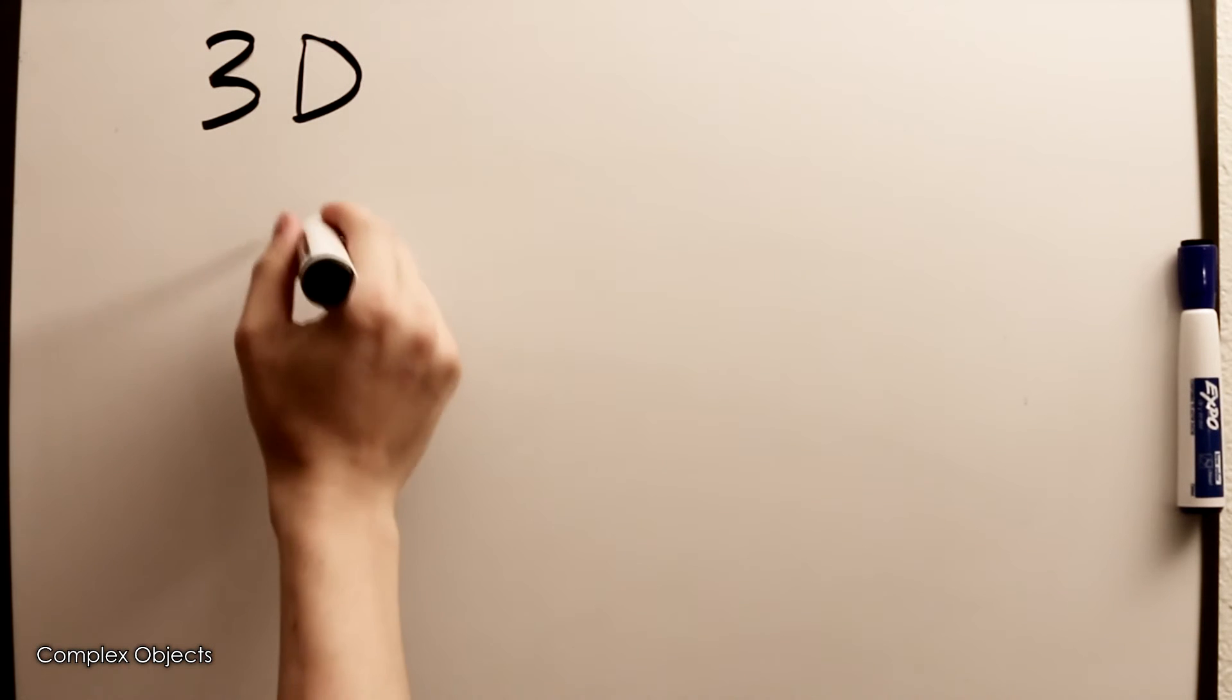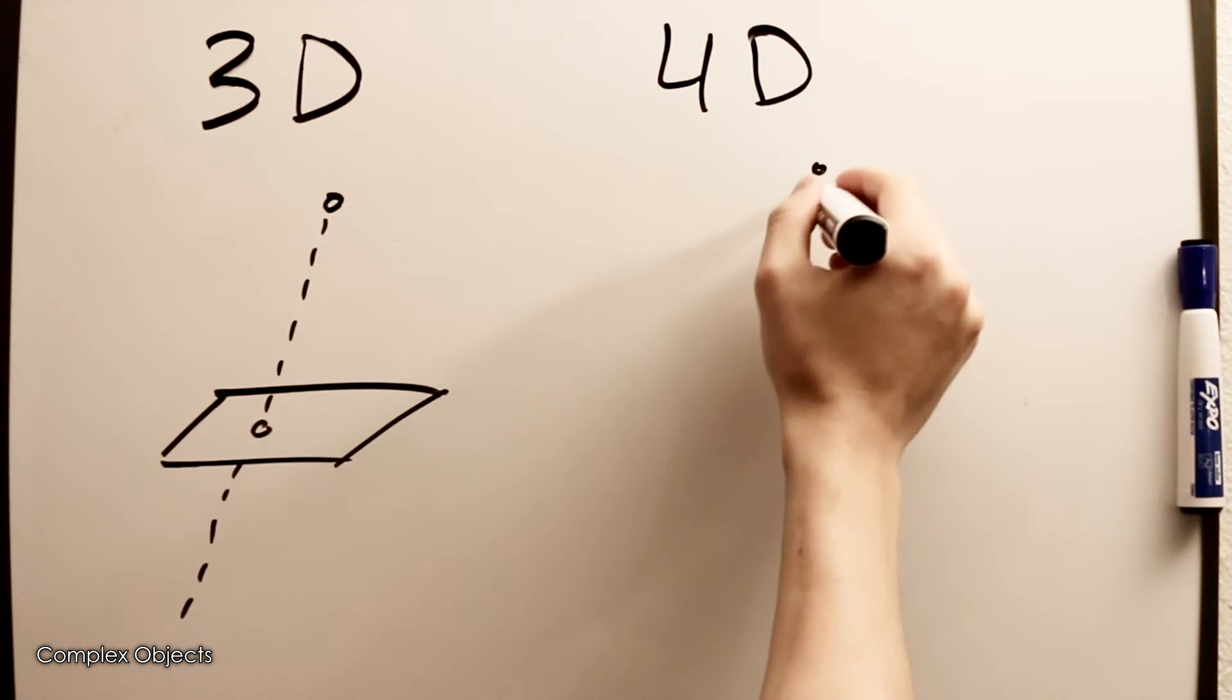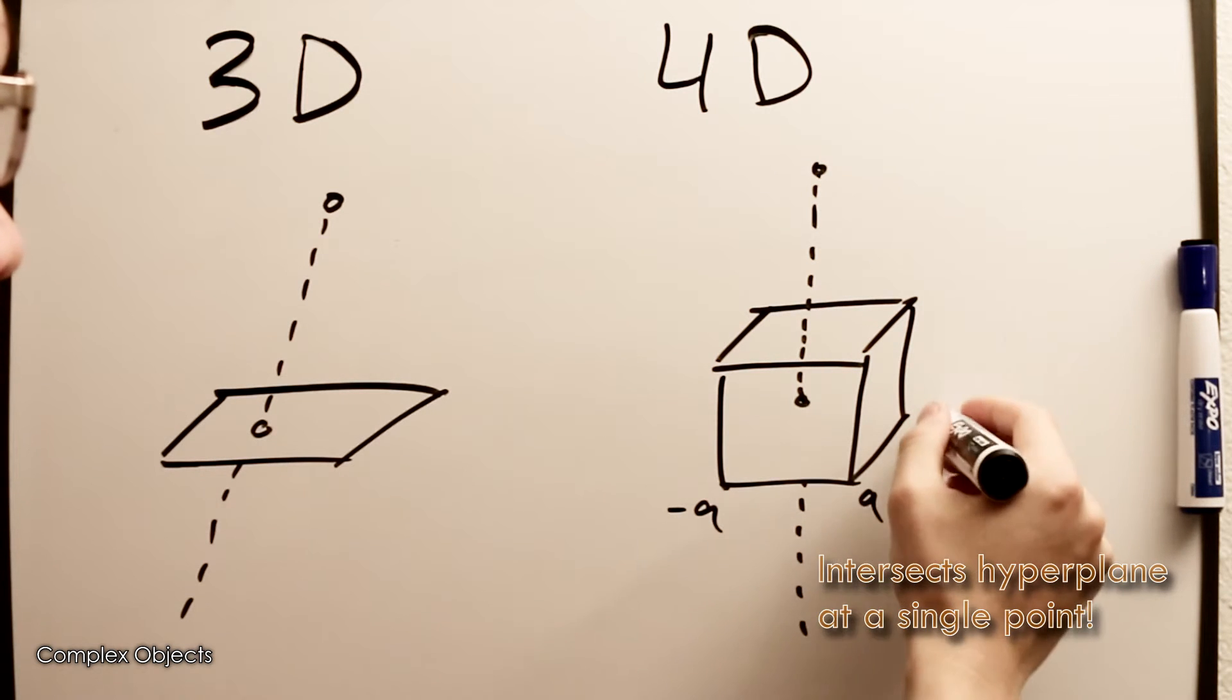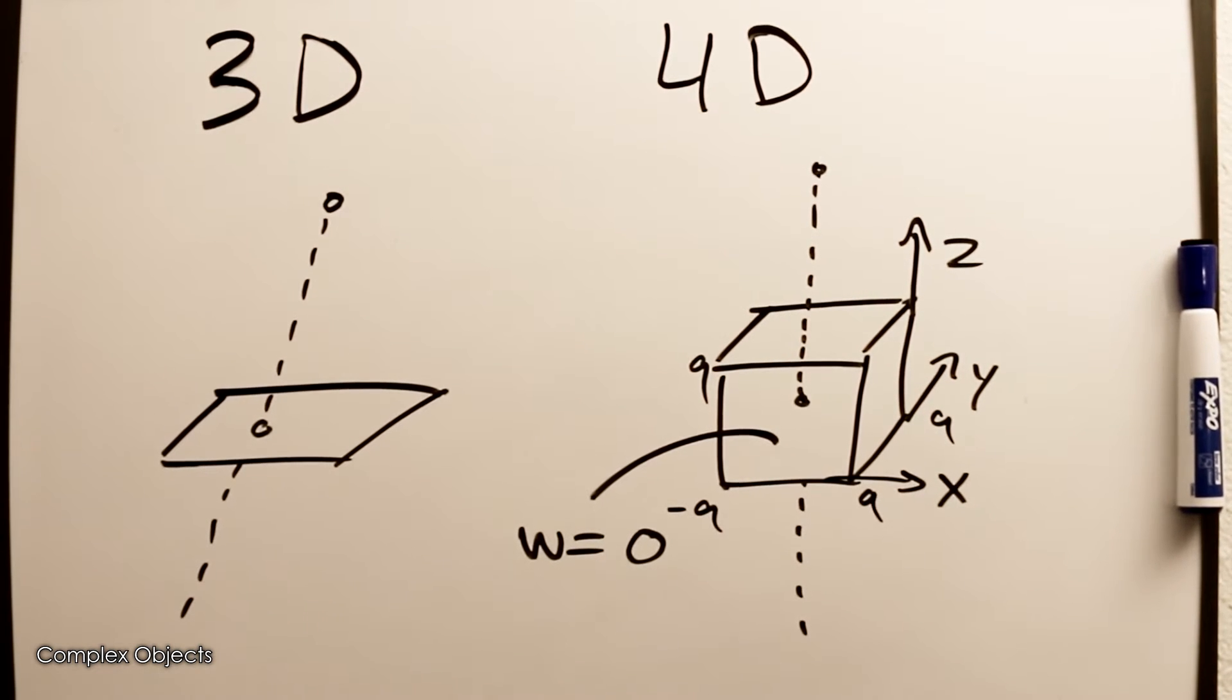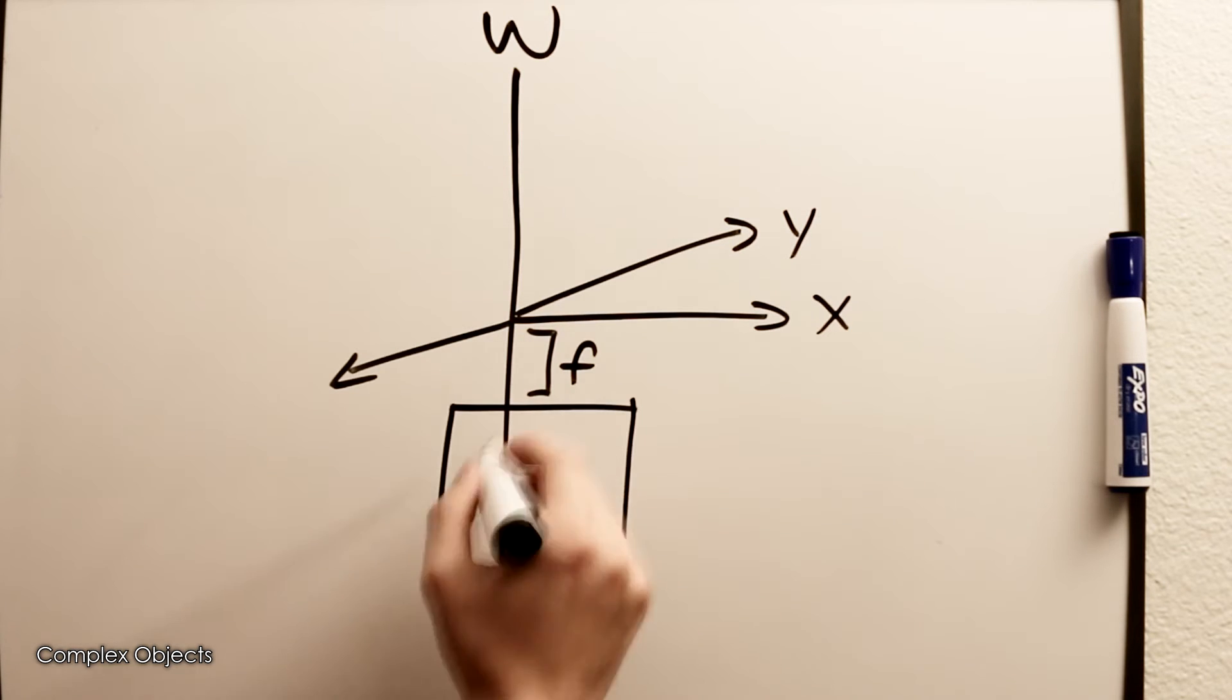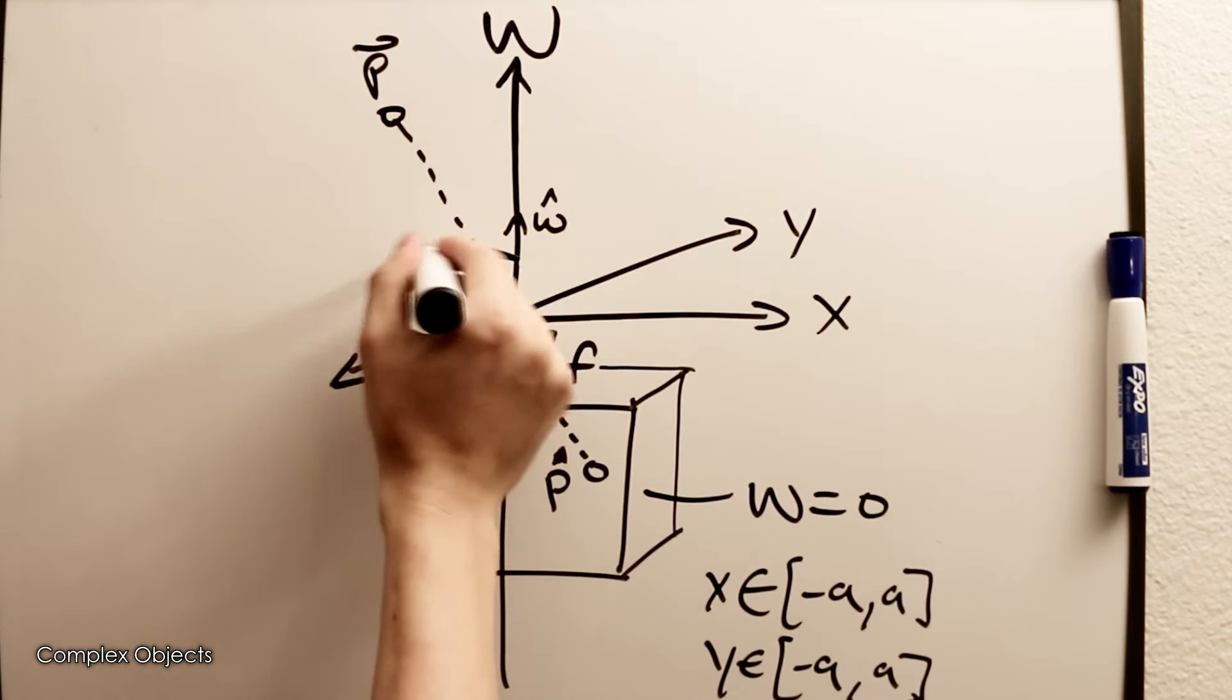Okay so we're finally ready to go to the four-dimensional case. So in 3D we had a line representing a path of light intersecting a two-dimensional plane and we recorded the location of that intersection. In the four-dimensional case we're doing the same thing except that the line is passing through four-dimensional space and intersecting a three-dimensional hyperplane. You can think of that as like a cube where the fourth coordinate which is called w is just zero everywhere or it's just constant throughout the cube.